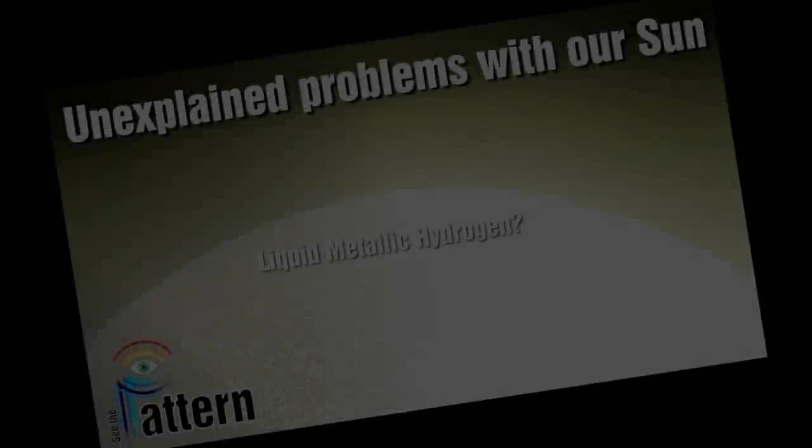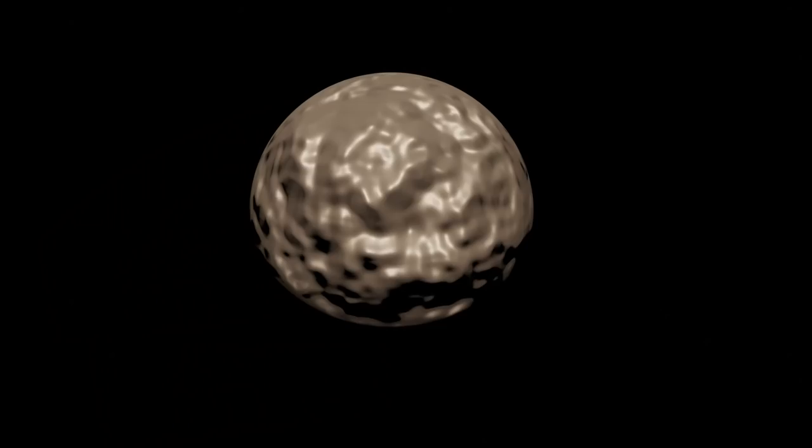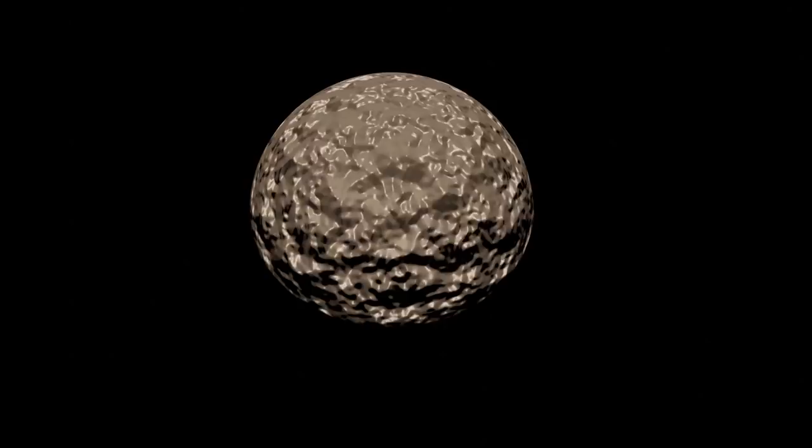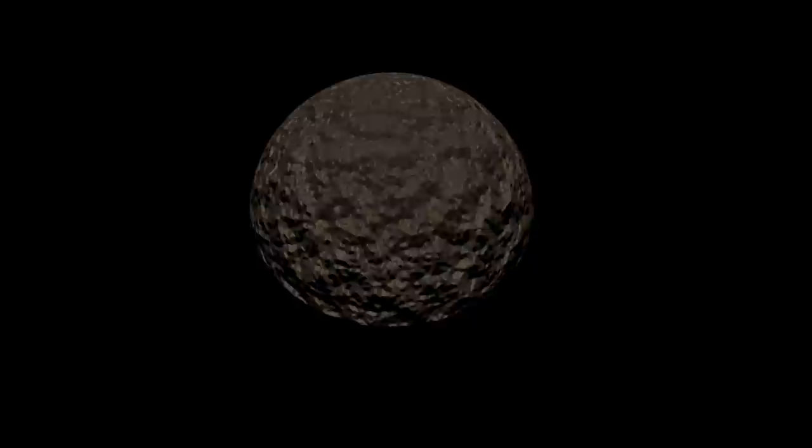In the last part, we examined some of the problems with the mainstream model of the sun. One of the key concepts underpinning the Robitaille model is that of the entire sun being composed of liquid metallic hydrogen. What is this and what state is the research at? Let's dive in and find out more.